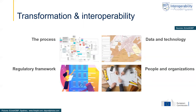Let us have a closer look at the entire process of transformation and interoperability, where we see four key components that should all be transformed and well aligned. There is the process itself, the regulatory framework, the data and technology, and also the people and organizations involved. Let me show you some characteristics that allow us to better understand the challenge of this transformation, but also the added value of working in a location-enabled way.